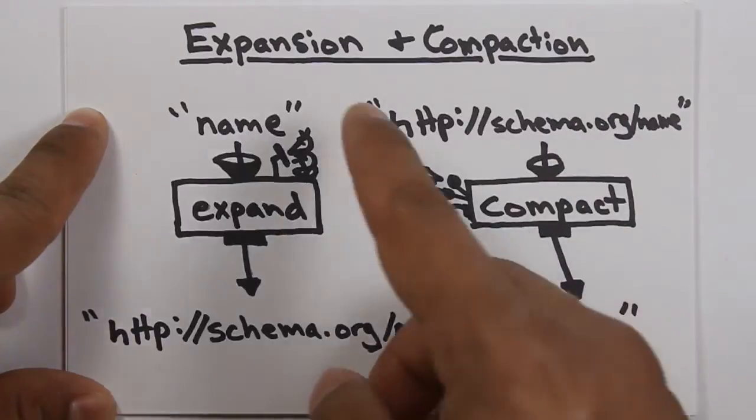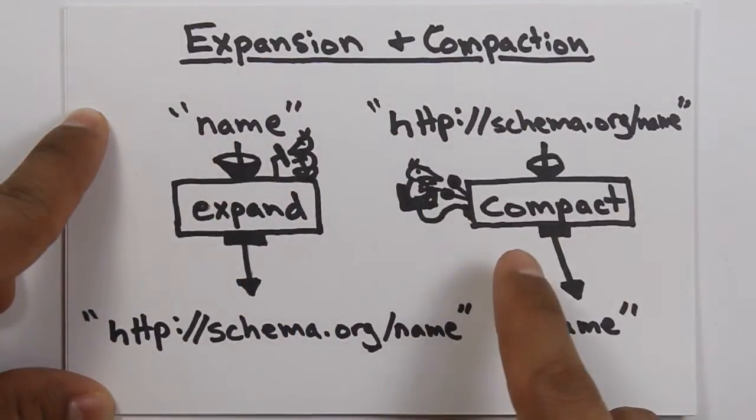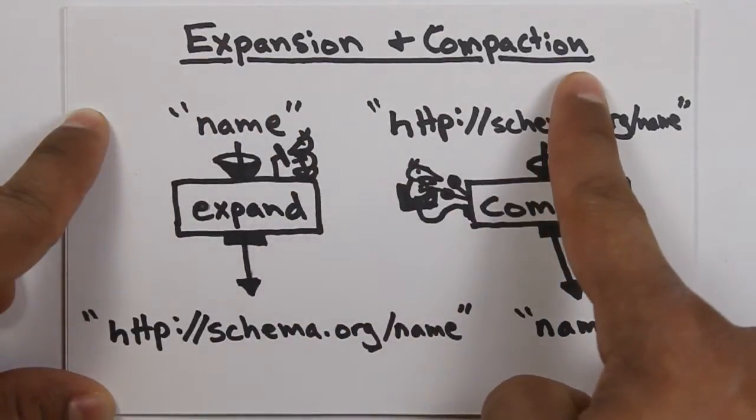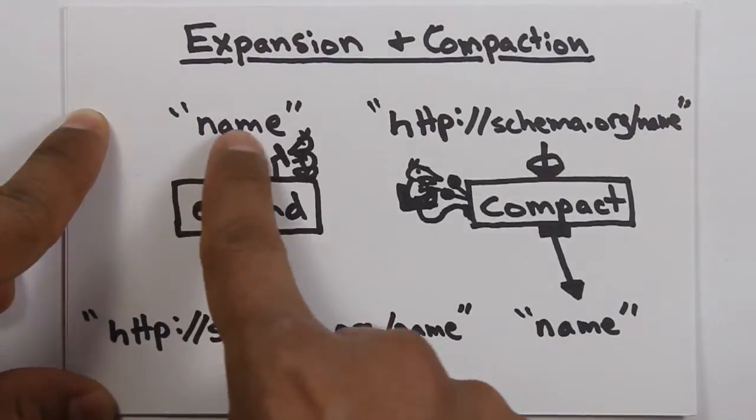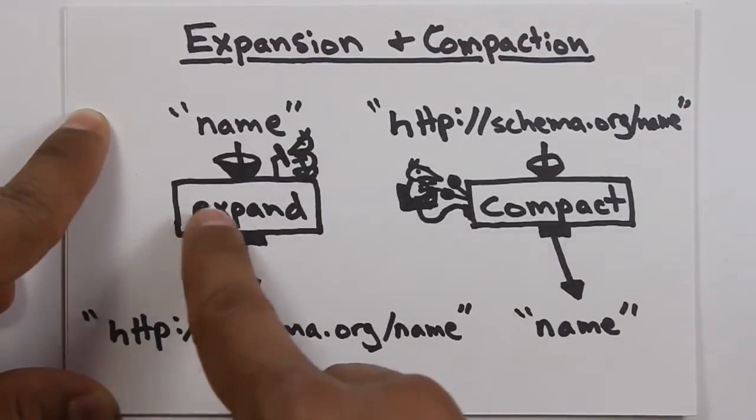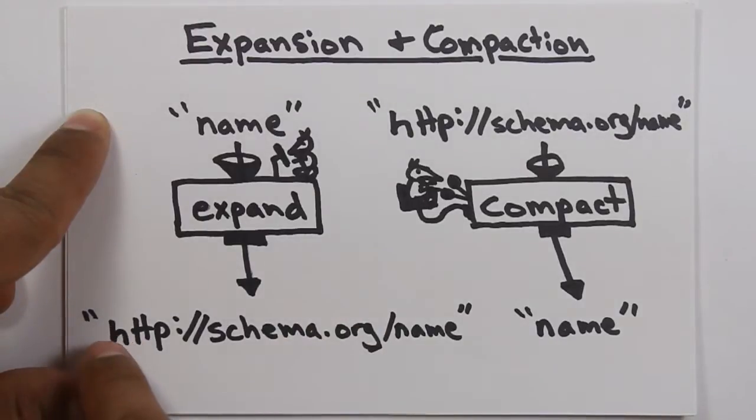In order to do that, there are two mechanisms in JSON-LD that work together. One of them is called expansion. The other one is called compaction. Now, expansion basically takes a JSON key, like name, and puts it through an algorithm, an expansion process algorithm, and spits out a long URL here. Compaction basically does the opposite of that.